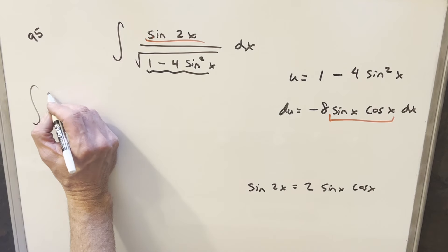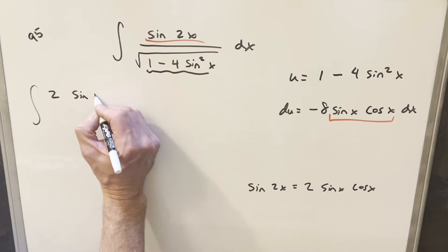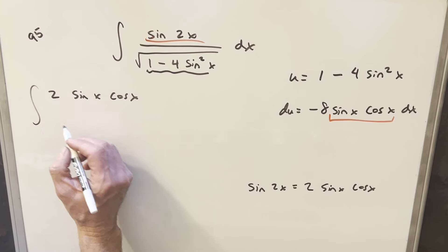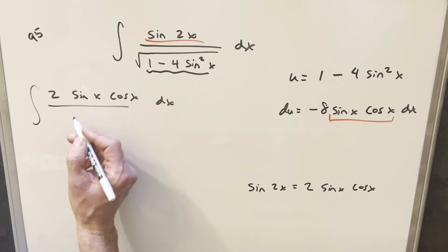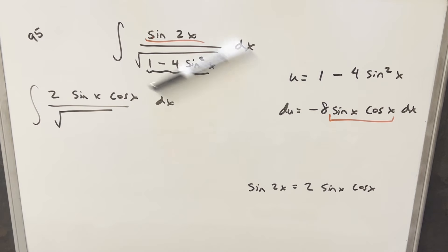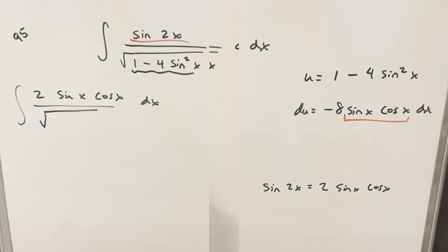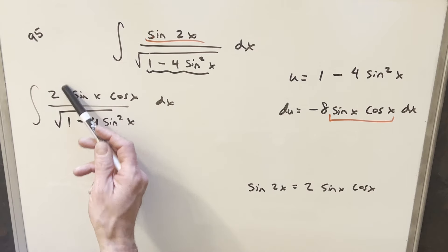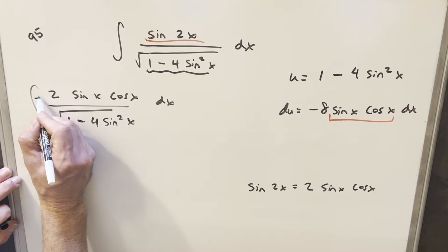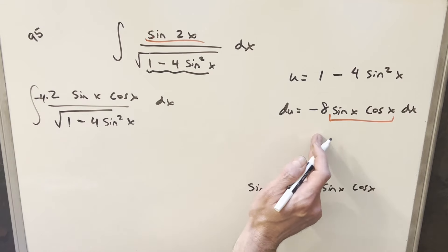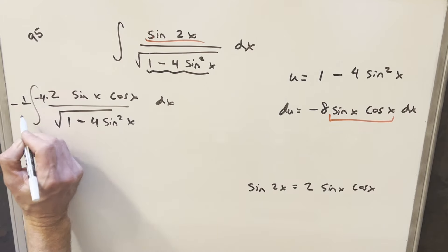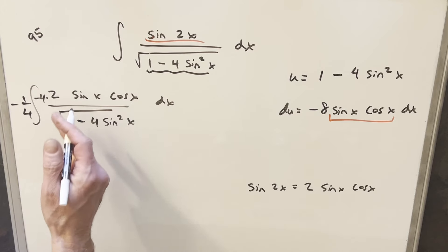If we write this integral as 2 sine x cos x, we'll just rewrite everything else. So what I can do to set up the numerator is multiply by a minus 4 here. So now I've created this minus 8, and we'll multiply by minus 1 fourth, so we're not changing it.